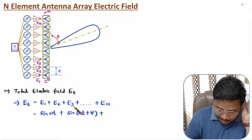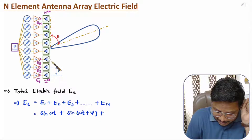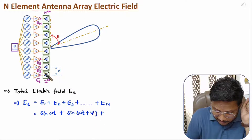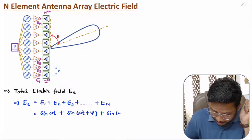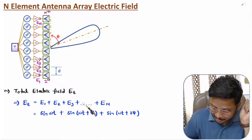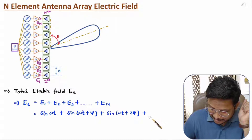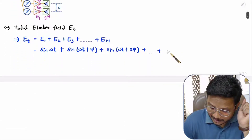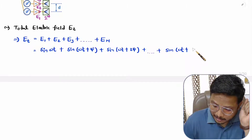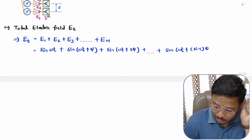E3 has a further phase added, and that additional phase is again ψ. So, with E2 we have sine(ωt + ψ), and with E3 we will have sine(ωt + 2ψ). Likewise, up to En, we will have an algebraic sum, where with En, the electric field will be sine(ωt + (n−1)ψ).